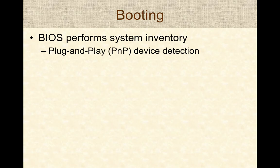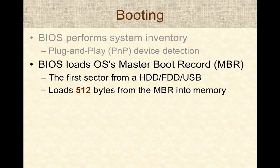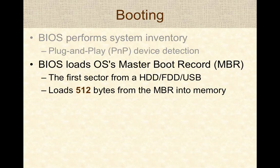Looking at the booting process again: the BIOS starts up and does POST — the power-on self-test — then collects an inventory of plug-and-play devices. Then, instead of trying to load the full operating system, the BIOS loads only a small piece of data from a storage device. Specifically, the BIOS loads what is known as the Master Boot Record, or MBR, from a storage device. The MBR is typically stored in the first sector of a hard drive, solid-state disk, or jump drive, and is only 512 bytes in size.